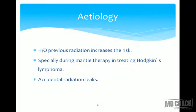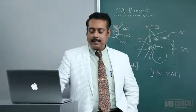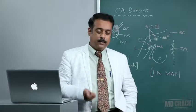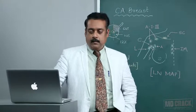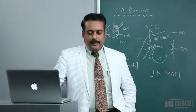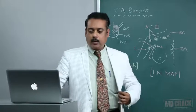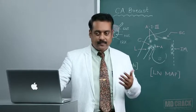Previous history of radiation exposure increases the risk of CA breast development. This is especially important when a child suffers from lymphoma and receives mantle radiation exposing the upper chest or upper thorax, creating a chance for development of CA thyroid as well as CA breast. Accidental radiation leaks also contribute, though this is seen more in western countries.